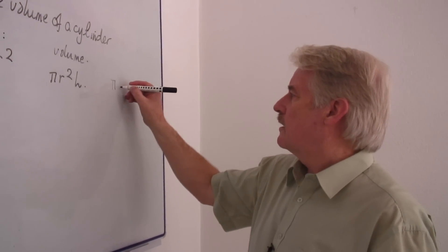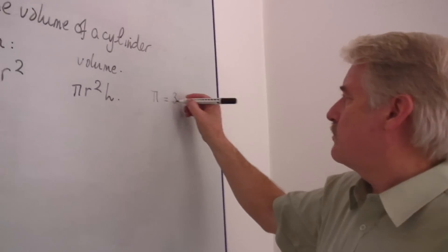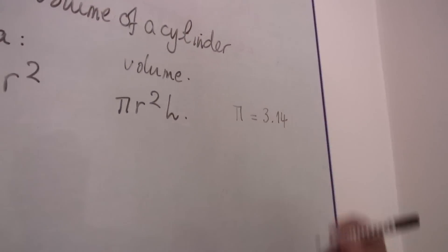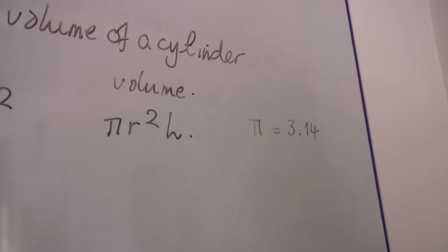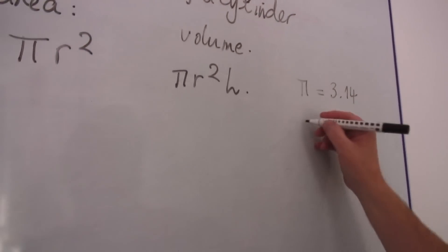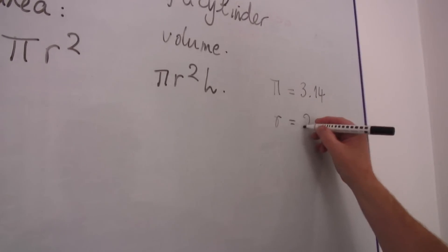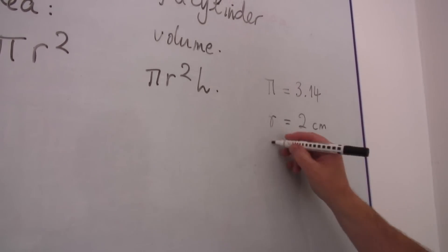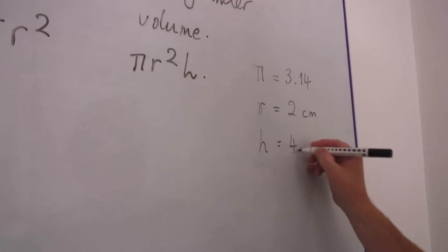We know that pi is 3.14, something like that approximately. Let's use a radius, let's say r is 2 centimetres and let's have a height of 4 centimetres.